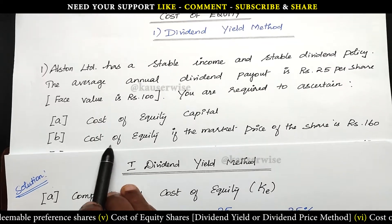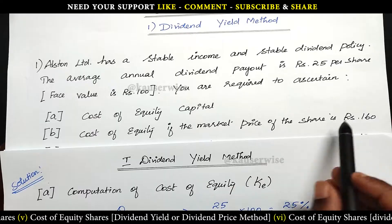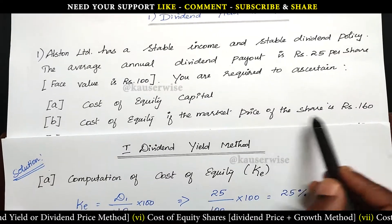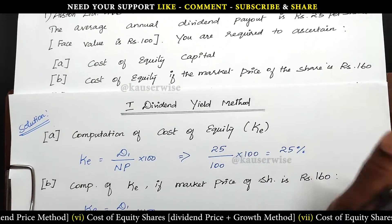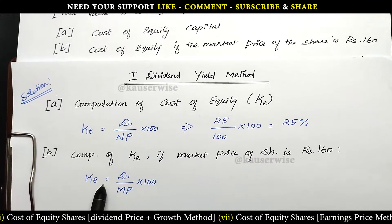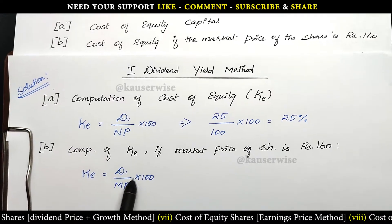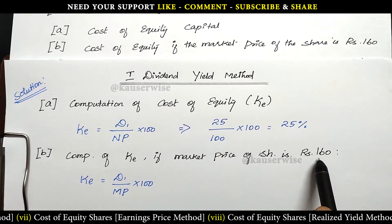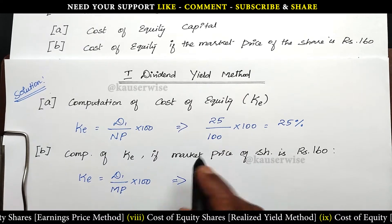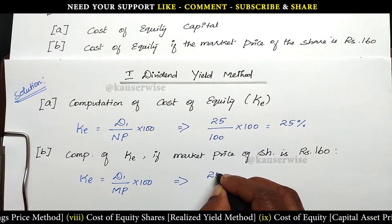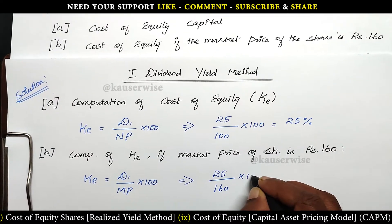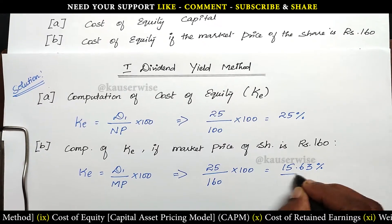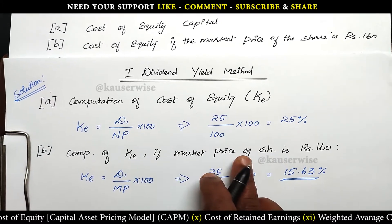Case 2: Cost of equity if the market price of the share is 160. Since market price is given, this is for existing shares. The formula is KE = D1 ÷ market price per share × 100. Dividend is 25 rupees and market price is 160. So 25 divided by 160 into 100 gives a cost of equity of 15.63 percentage. You can round up the figure.